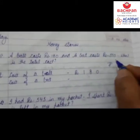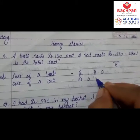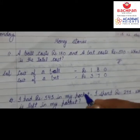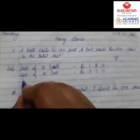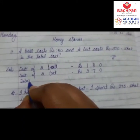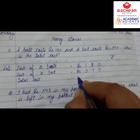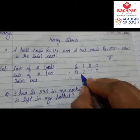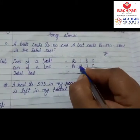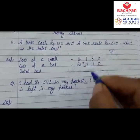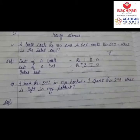The bat costs rupees 370. Next line, what is asked: what is the total cost? Write it here. To find the total cost, we need to do addition — so make the addition sign and solve the question.